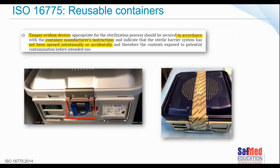Tamper-evident devices appropriate for the sterilization process should be secured in accordance with the container manufacturer's instructions. They must be able to indicate that the sterile barrier system has not been opened intentionally or accidentally, and that the contents have not been exposed to potential contaminants before use. The image shown is the validated method from the container manufacturer for closure. If I'm auditing a facility and I see a closure method such as autoclave tape stretched across the container, I'm obviously going to be concerned — it blocks the exit and entry point for the sterilant.